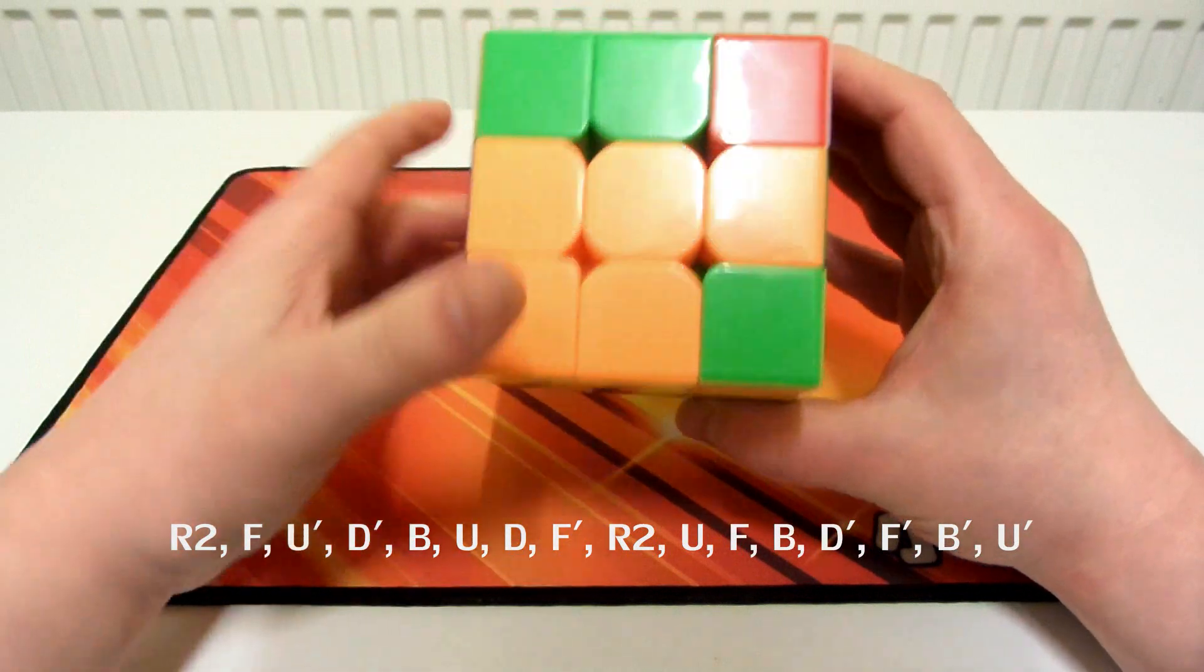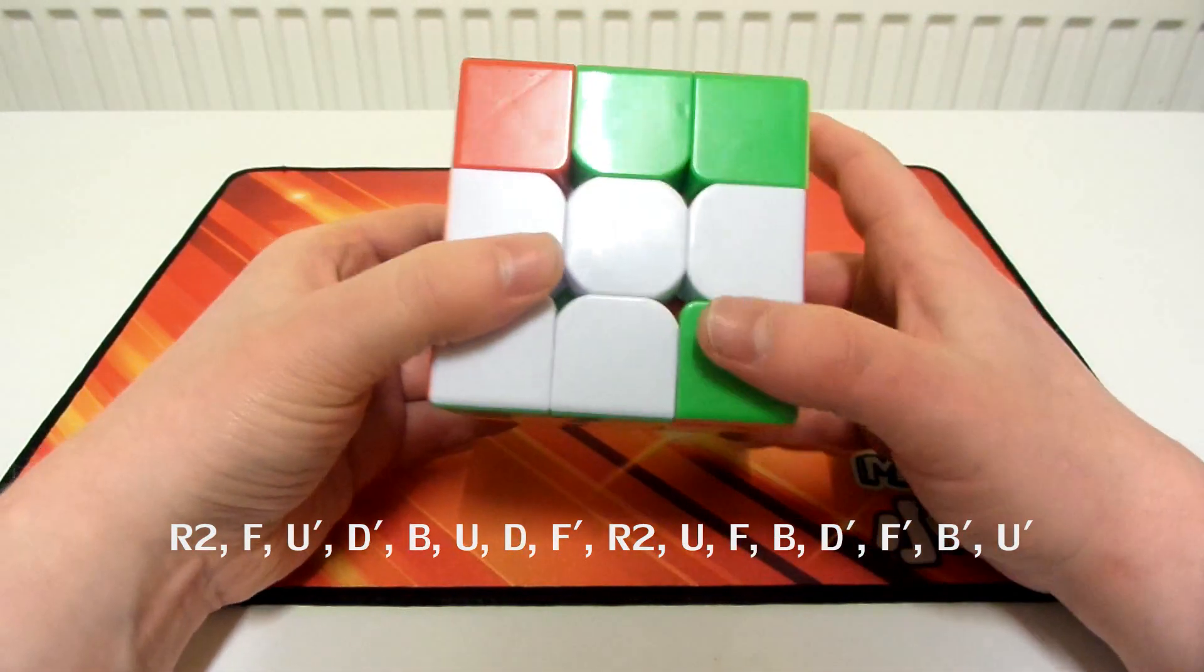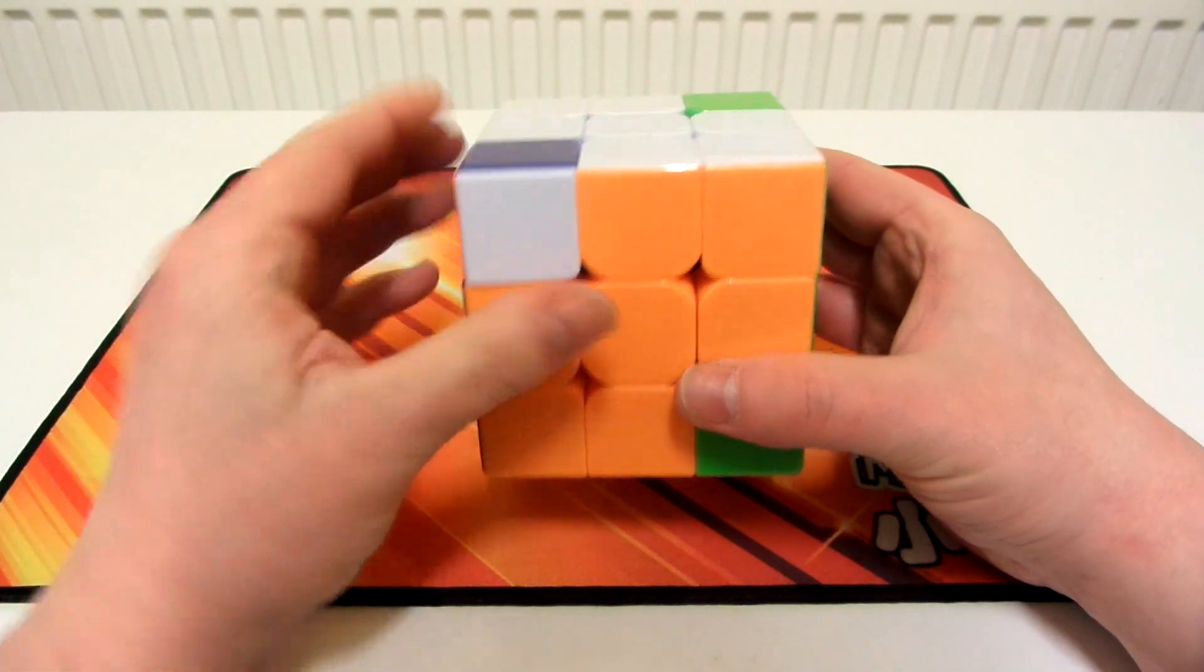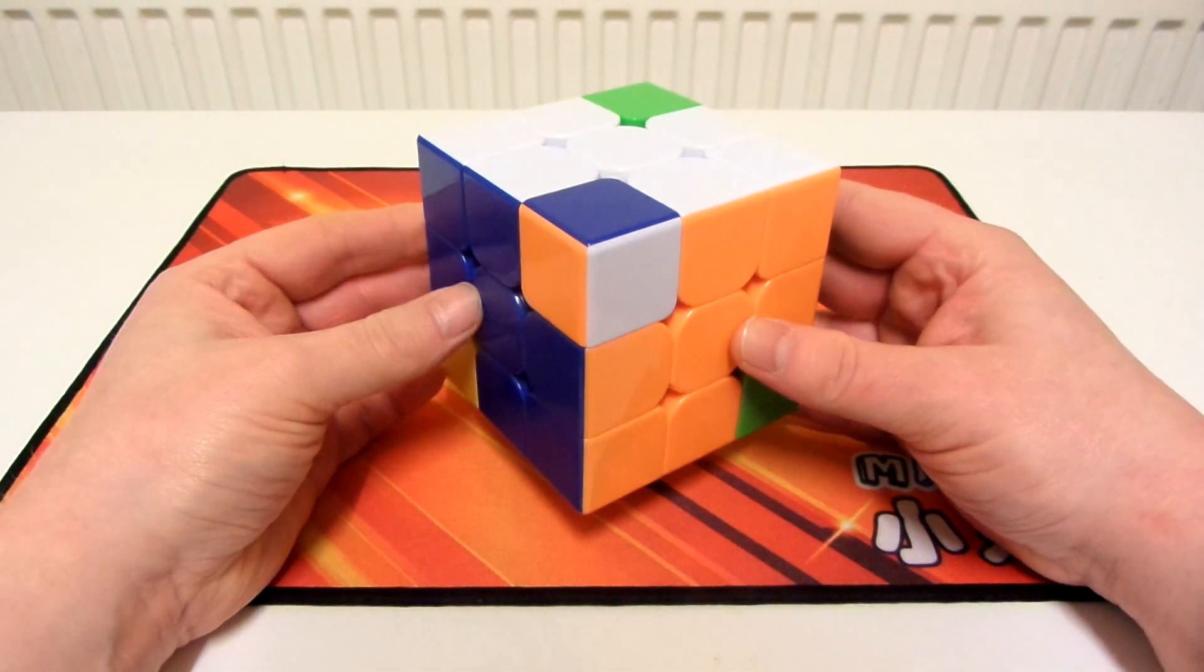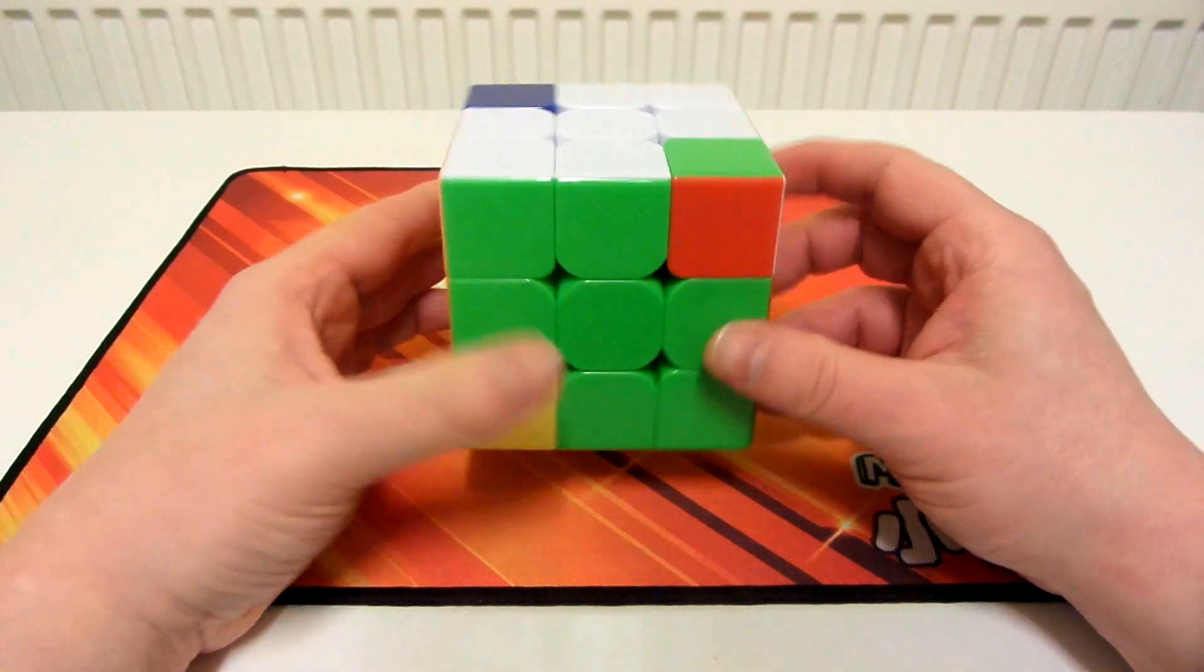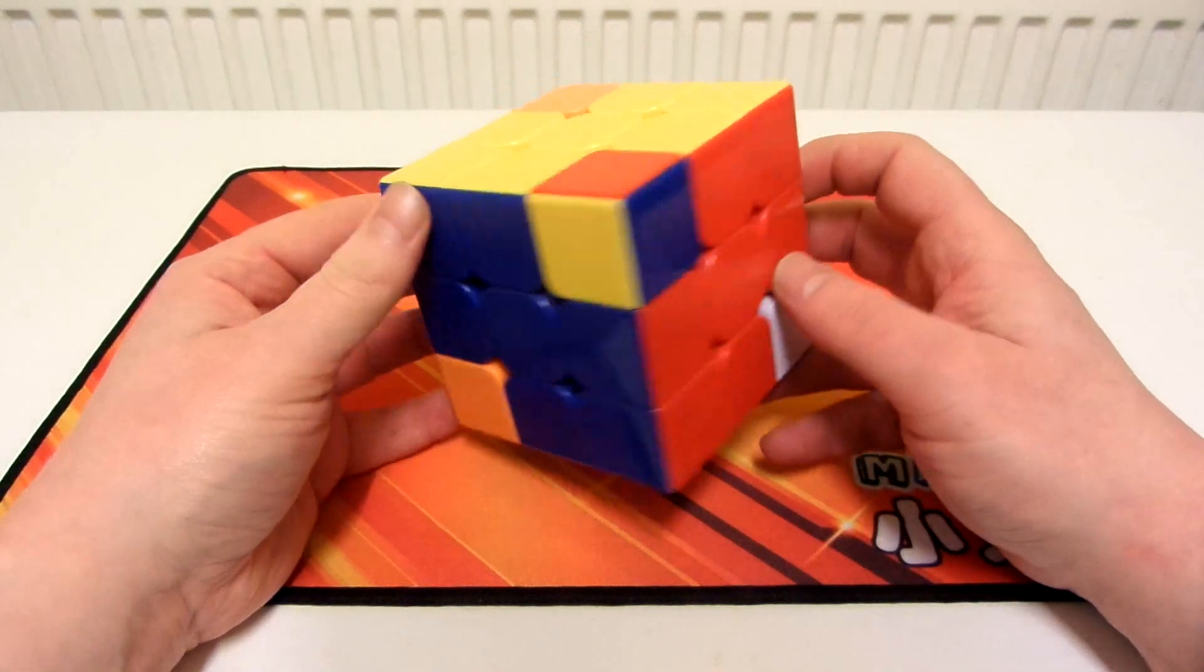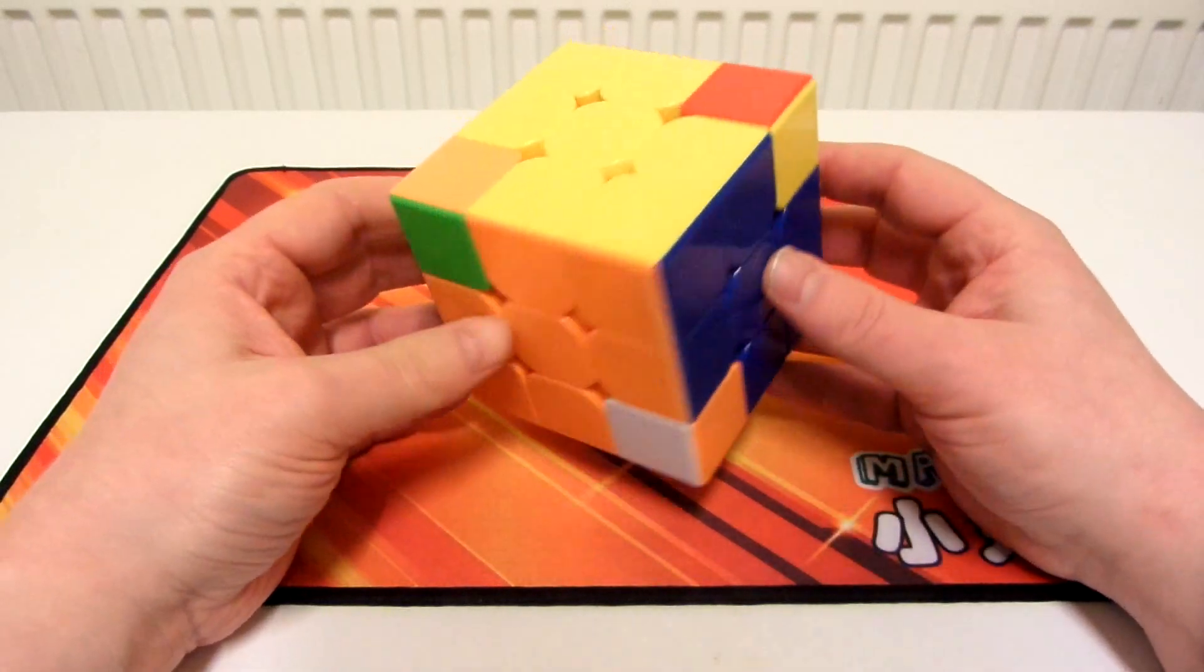B' and U' B', and there is your four corner twist pattern. So we've got four corners on the puzzle which are twisted and I think it's a really nice looking pattern.